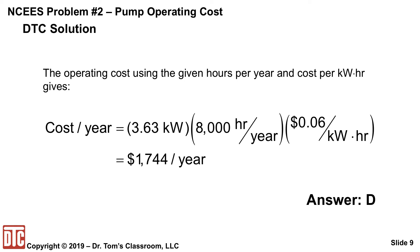The cost is simply: take 3.63 kilowatts, multiply by 8,000 hours per year as given, and by the cost of 6 cents per kilowatt-hour. The kilowatts and hours cancel, and you end up with dollars per year: $1,744 — and that's answer D.